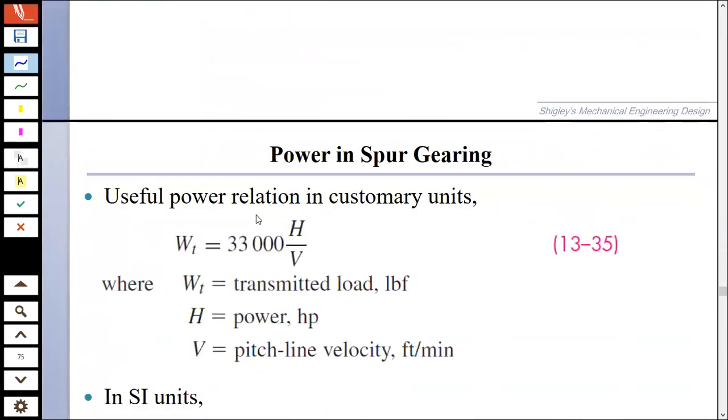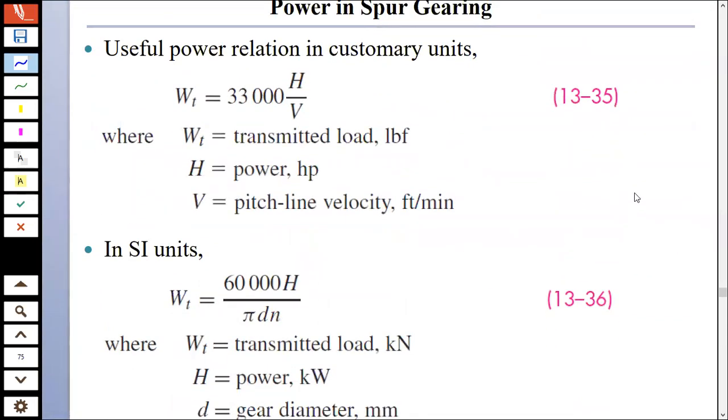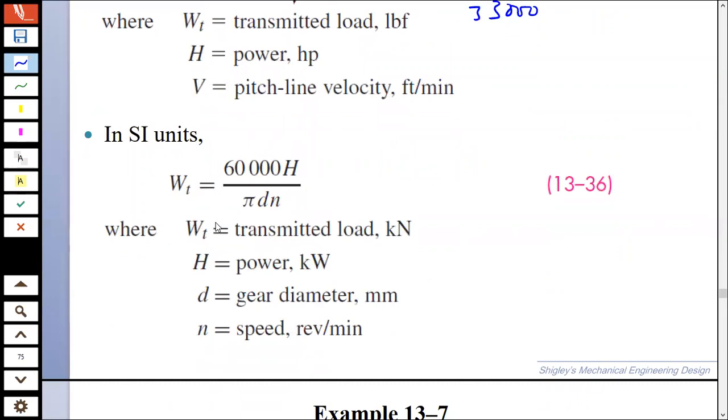Now, we can also find the pitch-line velocity. What is the pitch-line velocity? It is the linear velocity of a point on the gear at the radius of the pitch circle. You should remember that V is equal to pi D N by 12. Power in spur gear, if we want to find WT, which is the transmitted load, that will be equal to 33,000 H over V. This is H equals WT times V over 33,000, which is generally how we write it. This is in US units, foot-pounds. Or if you want in watts, then WT is equal to, H is equal to WT times pi D N divided by 60,000.